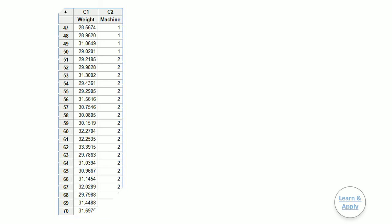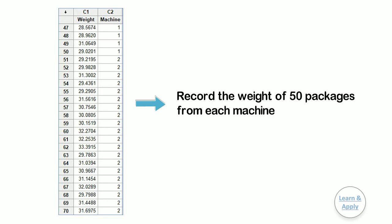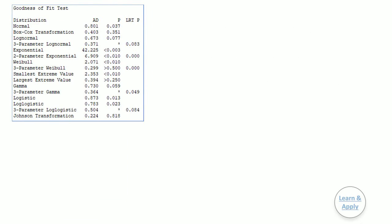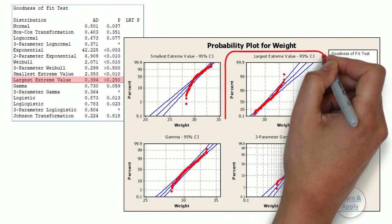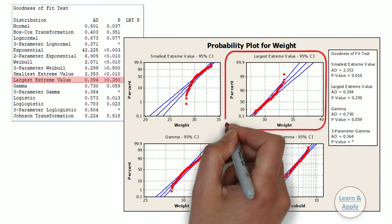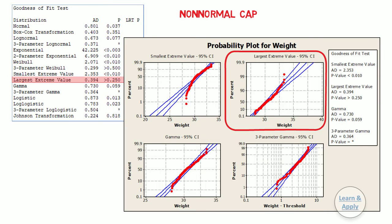The engineer randomly samples 50 packages from each machine and records the weight of each package. The engineer knows that the weight of the food packages follows a largest extreme value distribution by conducting individual distribution identification having a p-value more than 0.25, and almost all the points fall within the confidence bounds of the largest extreme value plot. The engineer then performs non-normal capability analysis for multiple variables to evaluate how well the weight of the food packages meets customer requirements for the two machines.